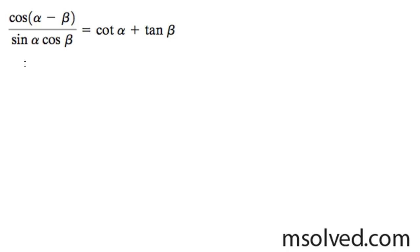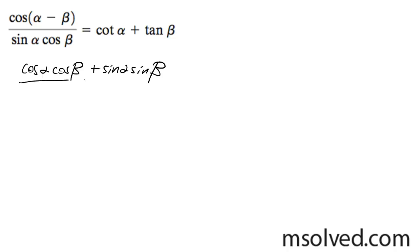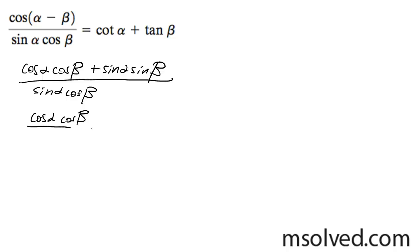Let's prove the left side is equal to the right side in this trig identity. I'm going to start with the numerator: cosine alpha cosine beta plus sine alpha sine beta, all over sine alpha cosine beta. I'm going to partition this up so I get cosine alpha cosine beta over sine alpha cosine beta, plus sine alpha sine beta over sine alpha cosine beta.